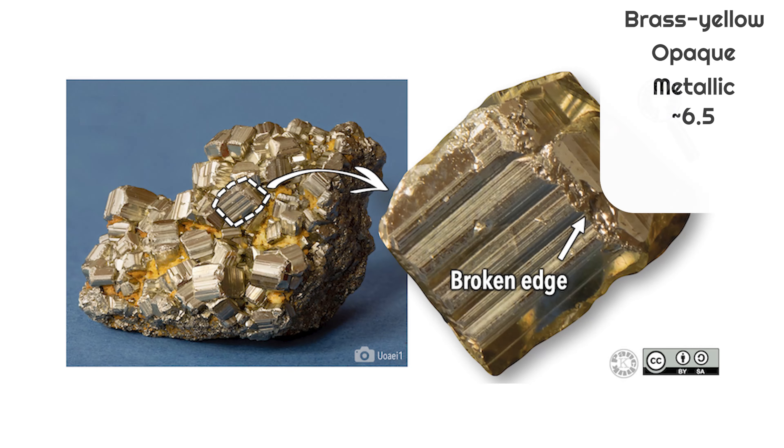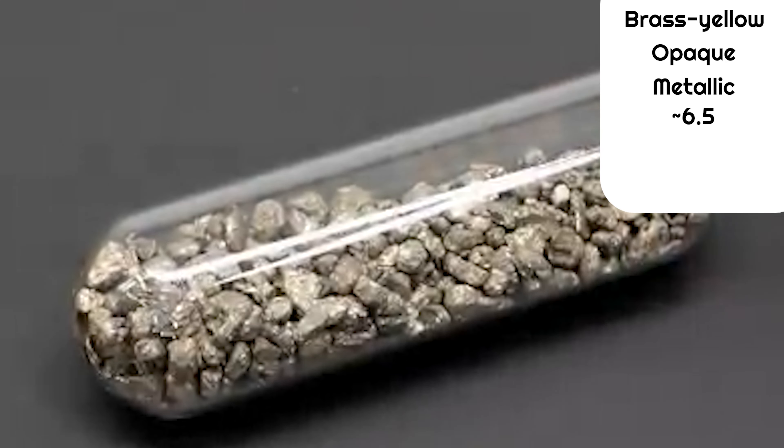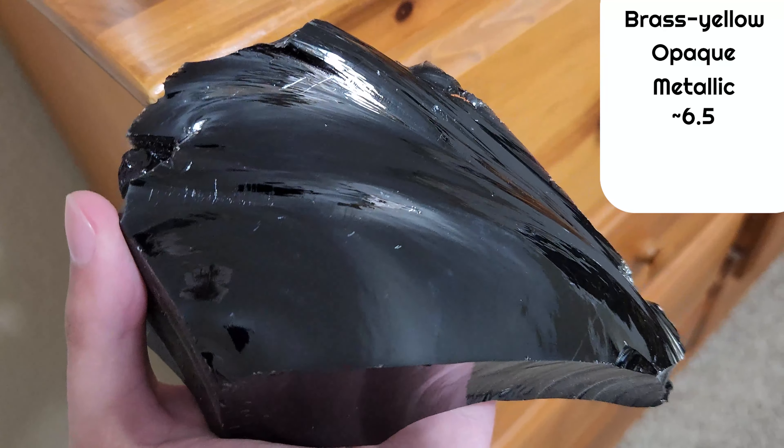If a mineral has broken off from a non-crystal lattice, you can observe the type of fracture. For example, fractured quartz and glass have a conchoidal surface. Some other minerals might have a fibrous fracture like in this piece of asbestos.